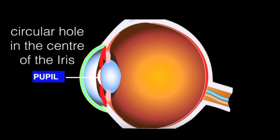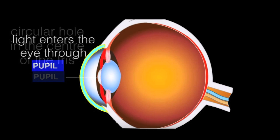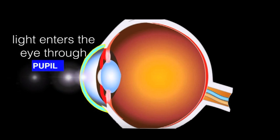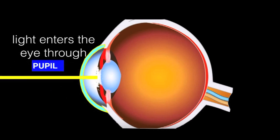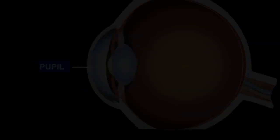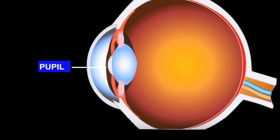The pupil is the circular hole in the center of the iris. Light enters into our eyes through the pupil. Did you know that the size of our pupil changes every now and then? Yes, it happens, and it depends on the amount of light that enters into our eyes.